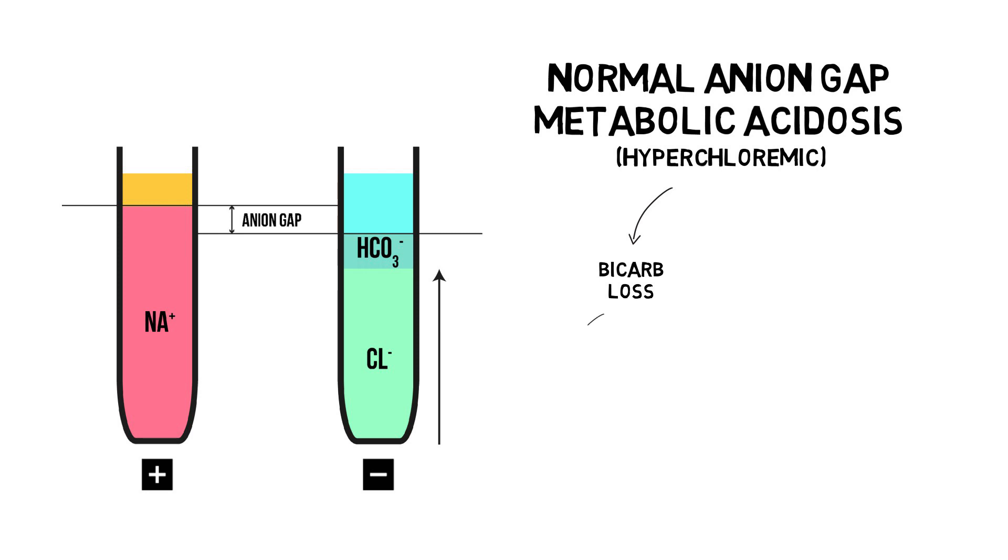Loss of bicarbonate can either be renal or gastrointestinal, extrarenal, as discussed in previous videos. If volume loss trumps bicarb loss, however, the patient will develop a contraction alkalosis. If bicarb loss is severe enough though, that won't be possible anymore.